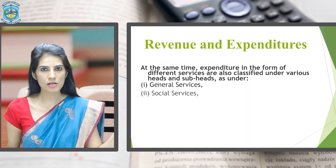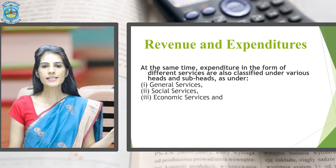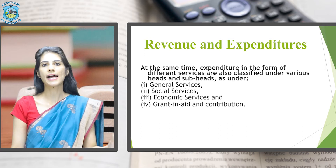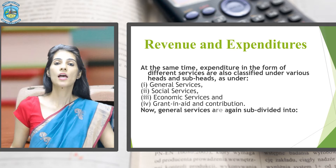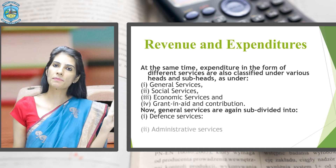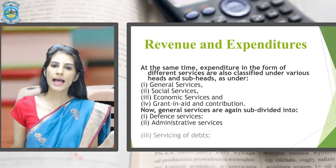Expenditures means how much the Government is spending on the country and on the citizens of the nation. Expenditures are divided mainly into four: the first one is General Services, the second is Social Services, the third is Economic Services, and the last one is Grants, Contributions and Subsidies given by the Government. General Services are further divided into Defence, Administrative Services, Servicing of Debt, and Fiscal Services — all monitored and controlled by the Government using funds from Tax and Non-Tax Revenues.